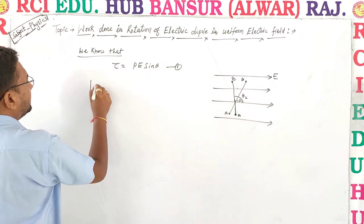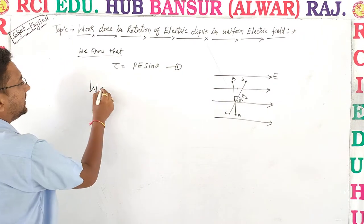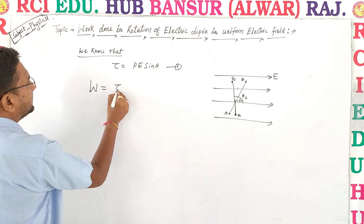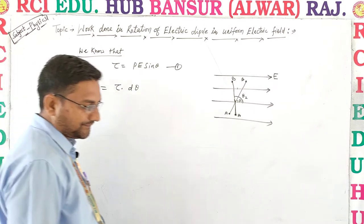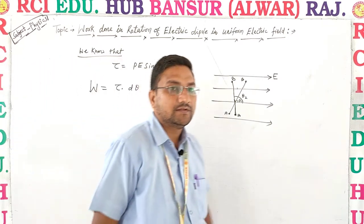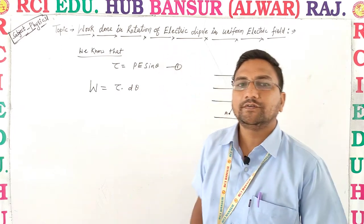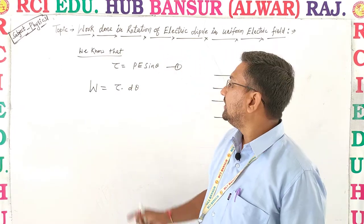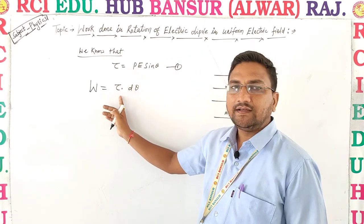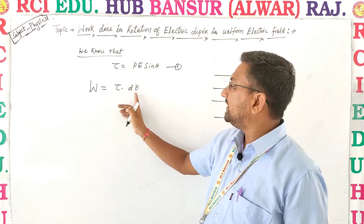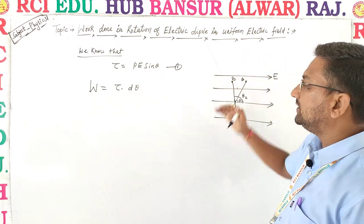Now we calculate the work done for this rotation. The formula is: work done W = τ · dθ. This is analogous to the simple work formula — Force into displacement — where here force is Torque and displacement is angular displacement.